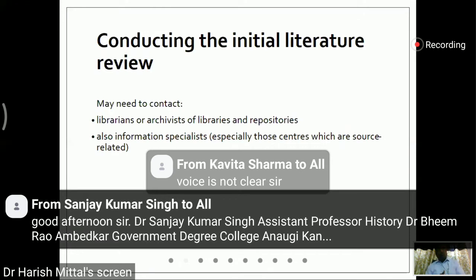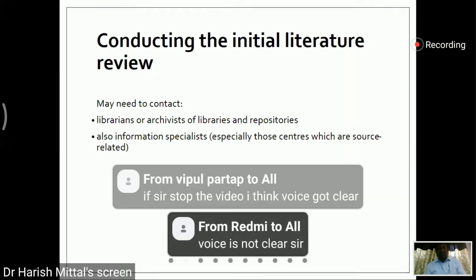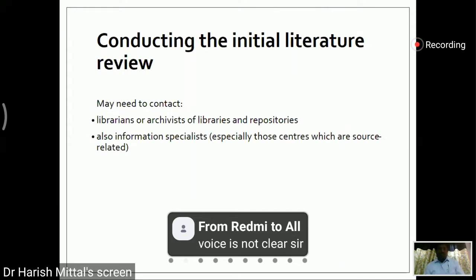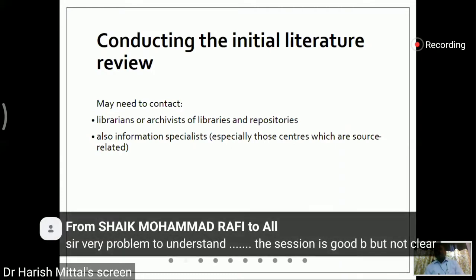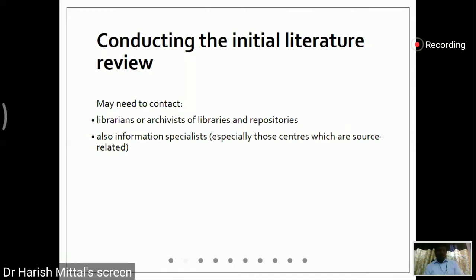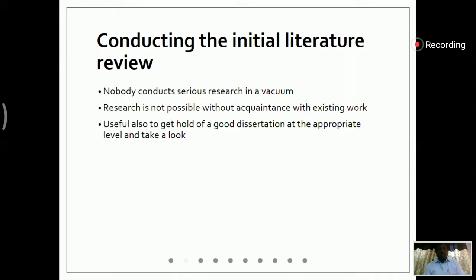Now, how to move forward for making this initial literature review? As we are in the digital era, it is very easy to move forward. The best thing to start with is our university library, or digital libraries, and some repositories available on the internet. We can see what work has already been done on similar topics and what are the possibilities to move ahead with that work.